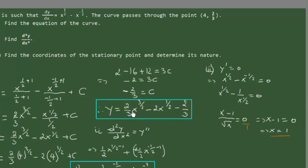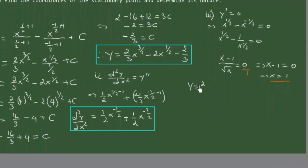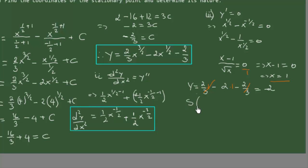We then replace x with 1 in the original function to obtain the y-coordinate of the stationary point. This gives y equals (2/3) times 1 to the power of 3.5 minus 2 times 1 to the power of 1.5 minus 2/3. Since 1 to any power is 1, we have (2/3) minus 2 minus 2/3. The 2/3 and minus 2/3 cancel out, giving y equals minus 2. So the stationary point S has coordinates (1, minus 2).